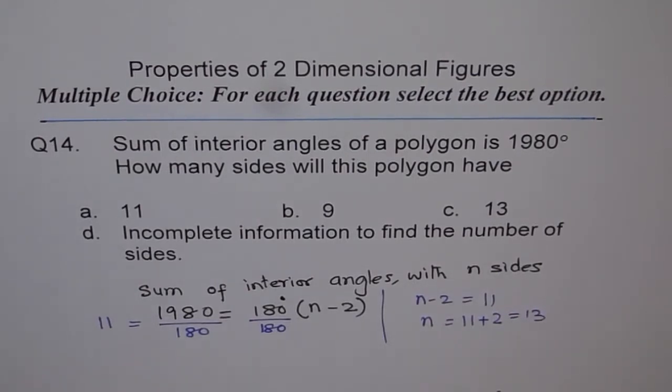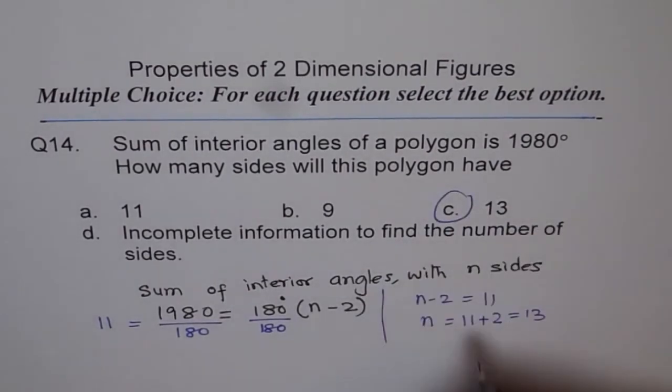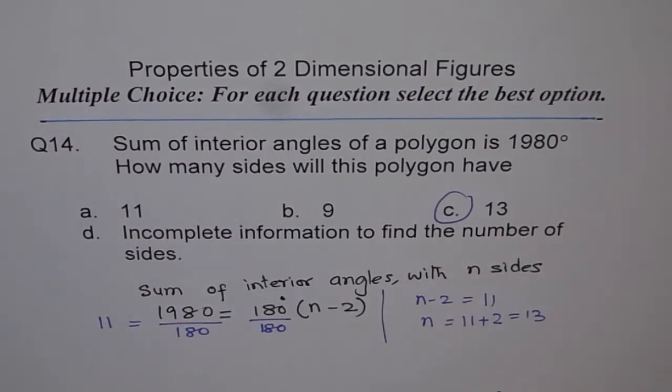So this is our answer: 13. We make choice C here. There is sufficient information given to us to find the number of sides.